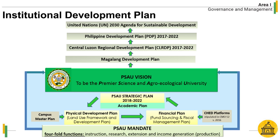President Rodrigo Duterte signed the SUCs Land Use Development and Infrastructure Plan Act, or Republic Act No. 11396, on August 22, 2019. The act aims to urge SUCs to invest in student services, specifically in dormitories, libraries, student centers, and similar infrastructure. Investment in these facilities is essential to make it easier for students to complete their education. Better student facilities can promote student mobility and will allow SUCs to rationalize their degree program offerings.